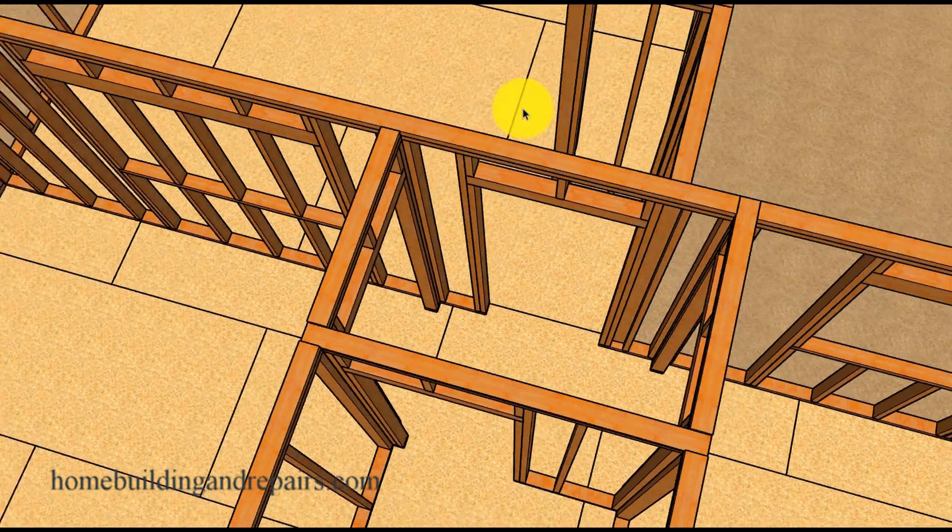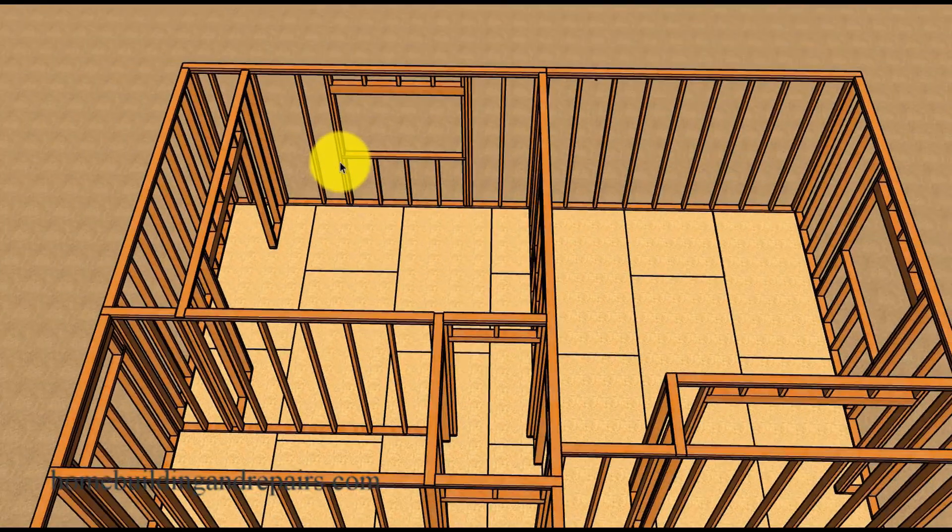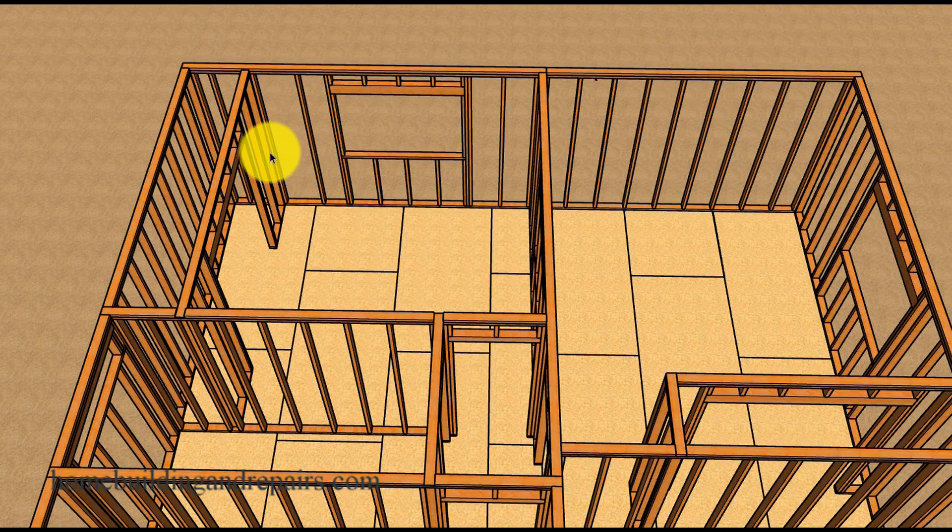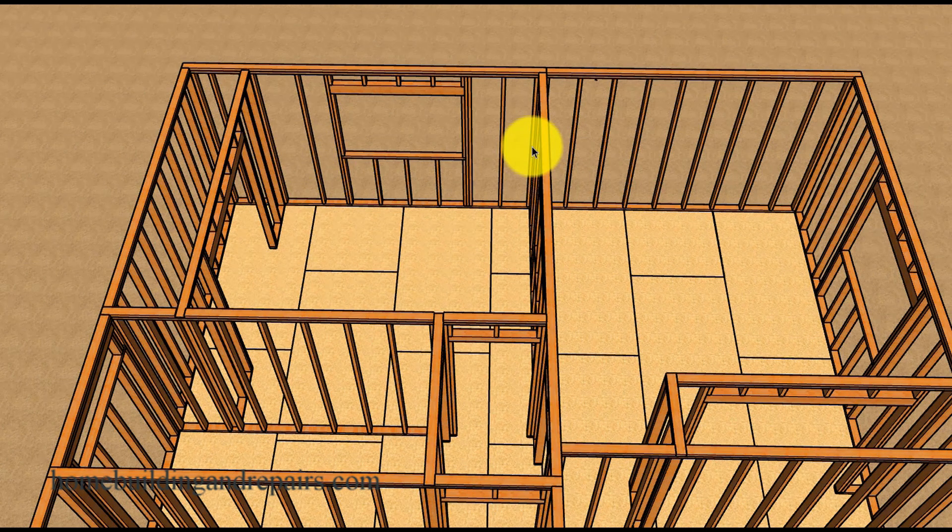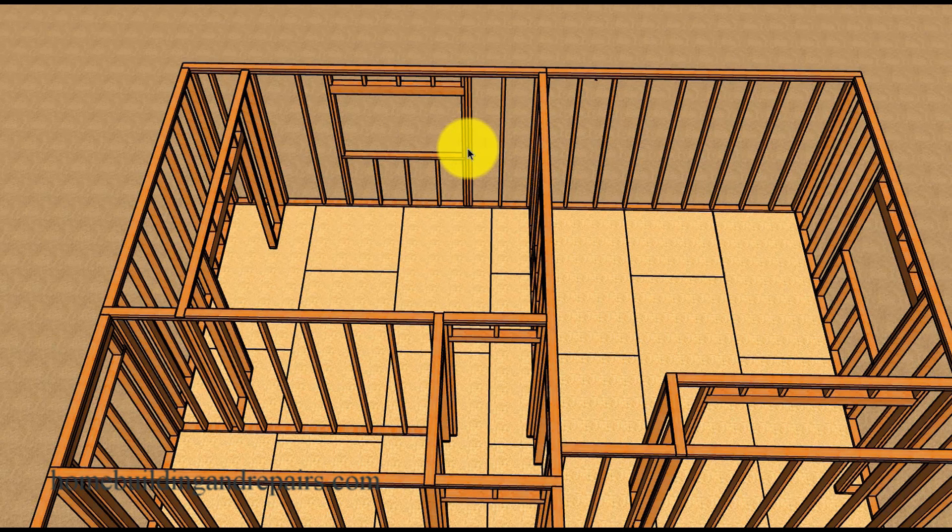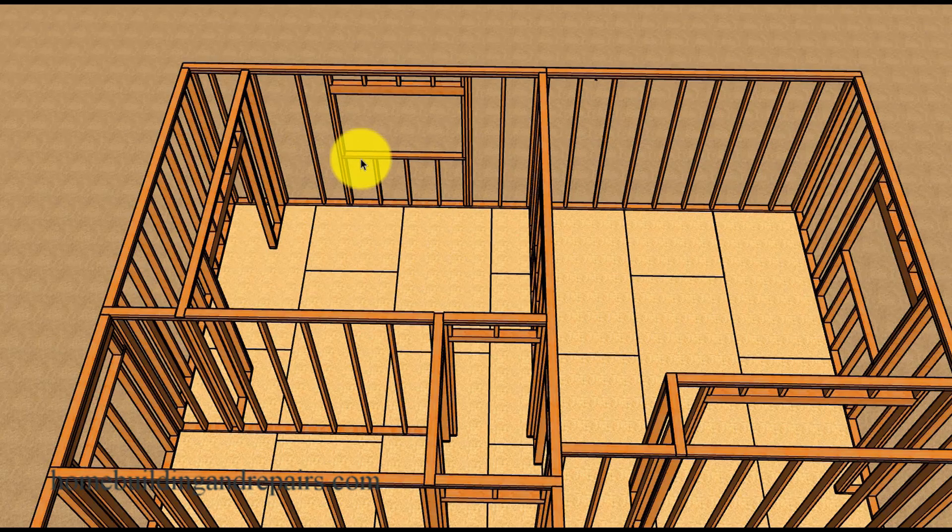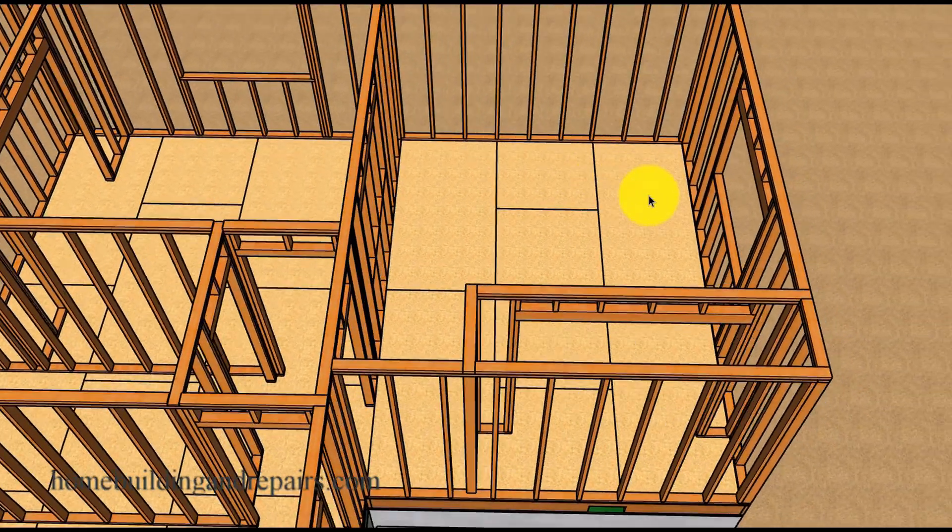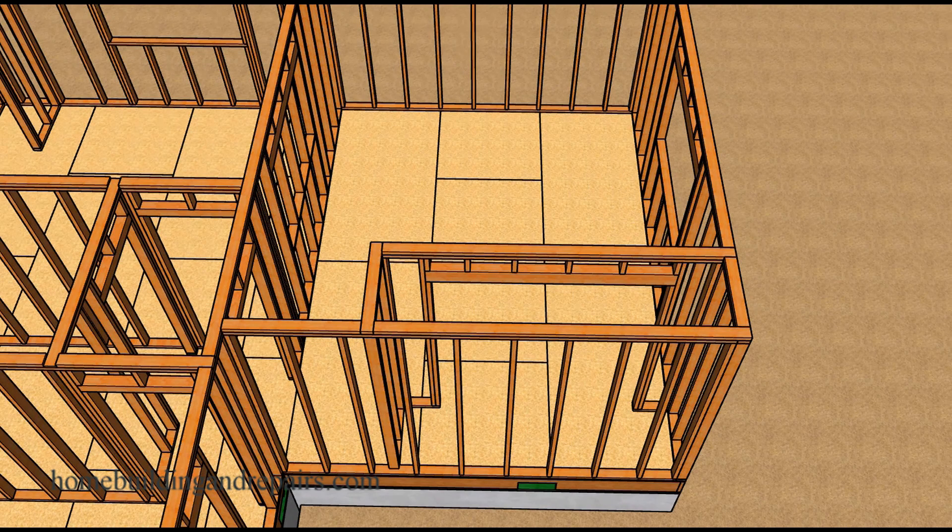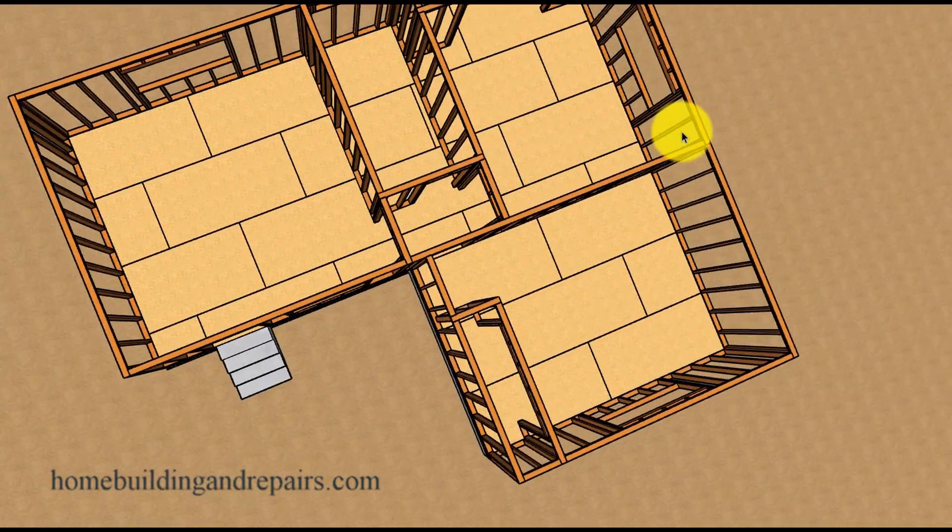And next up let's go ahead and take a look at the new window that is actually centered in between the interior wall framing to create equal sides on each side of the window on the inside. And again this window could be moved to either side if it needed to be for whatever reasons. And this finishes up our wall framing.